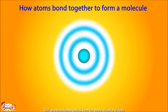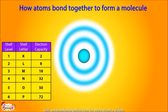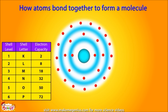Electrons keep moving in shells outside the nucleus. Each shell contains a fixed number of electrons. The first shell can have two electrons, the second can have eight electrons, the third can hold 18, and the fourth can hold up to 32 electrons.